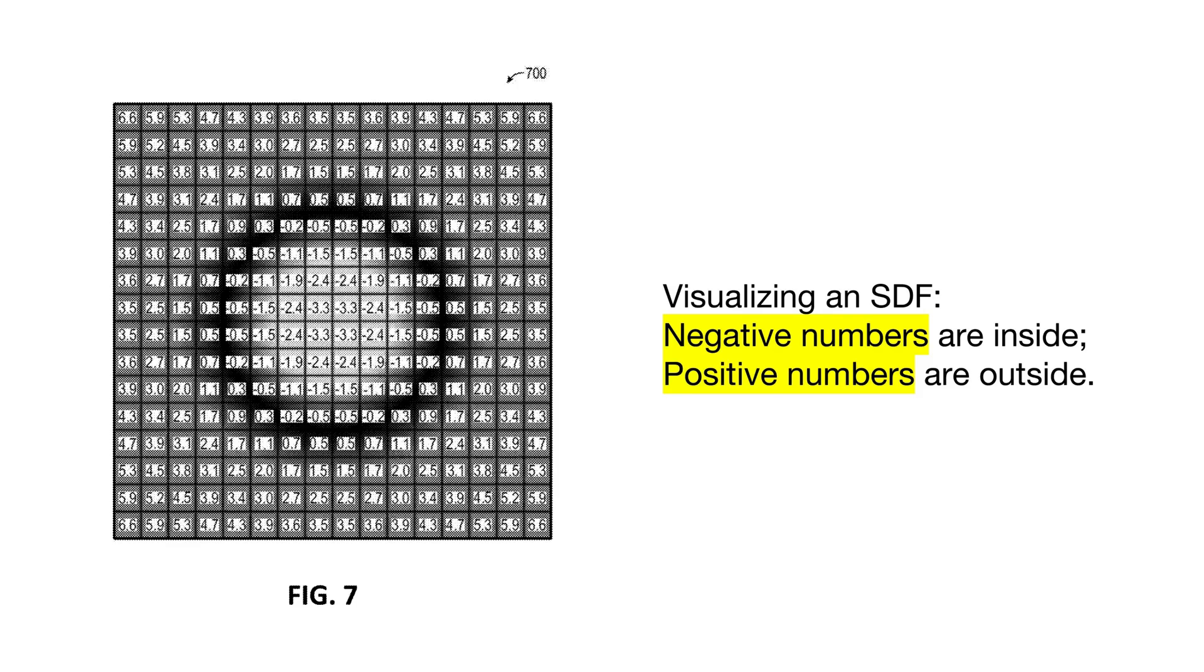This visualization from the patent breaks it down beautifully. So imagine you're a point in space. If you have a negative number, it means you're inside a solid object like a wall or another car. If you have a positive number, you're out in the open air. And what about zero? Well, zero is the magic number—that's the exact surface of the object. This system creates this smooth gradient, this invisible map of distances that gives the car a really rich, almost intuitive feel for its surroundings.